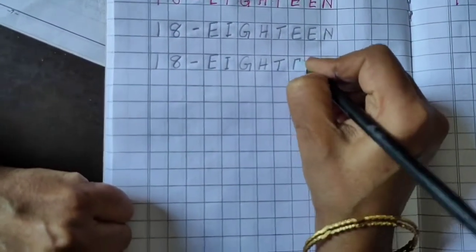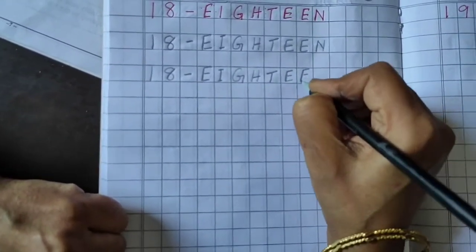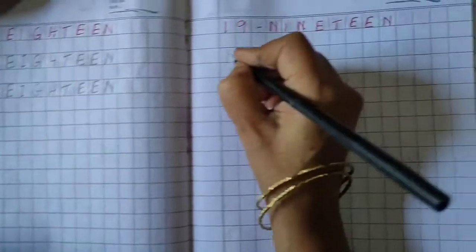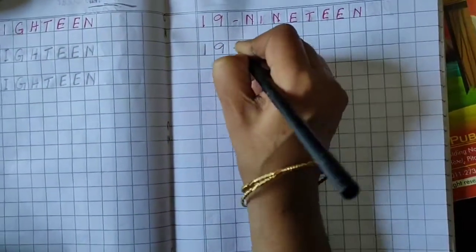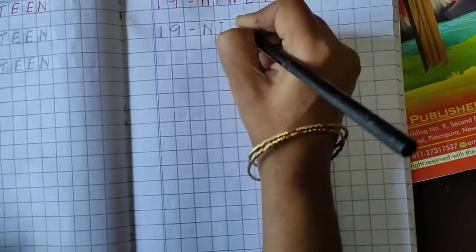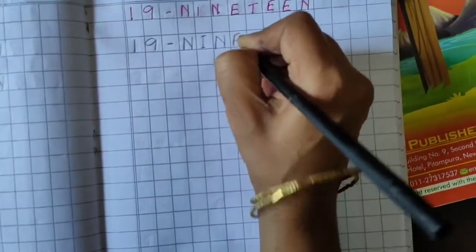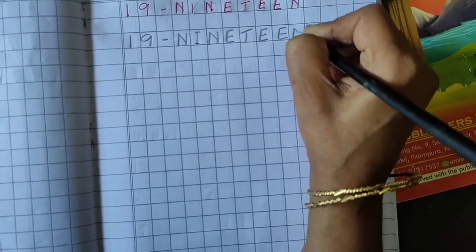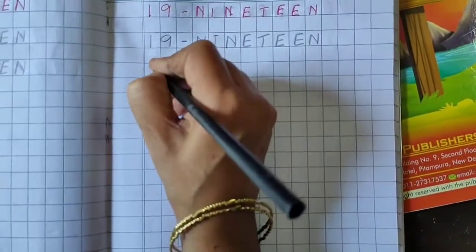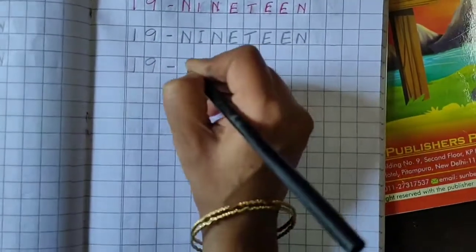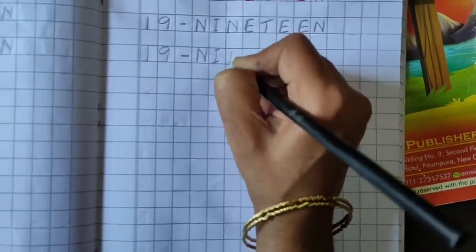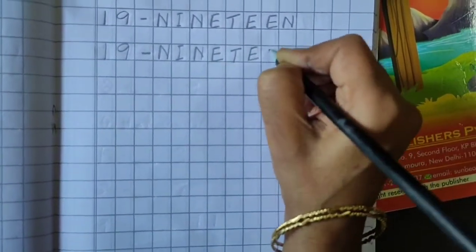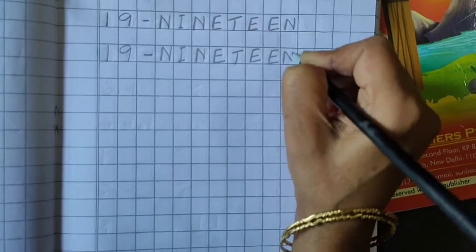Full page, you have to write children. Okay. 19: 1, 9. N, I, N, E, P, E, E, N. 19. Again: 1, 9. N, I, N, E, T, E, E, N. 19.